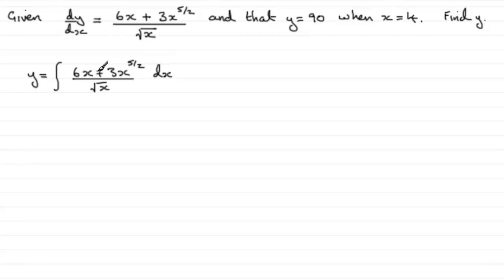Now to integrate something like this, it's got to be put in a better format. And that was the purpose of the previous question. Do you remember it said to re-express this in an alternative form. And that form turned out to be 6x to the power half plus 3x squared.